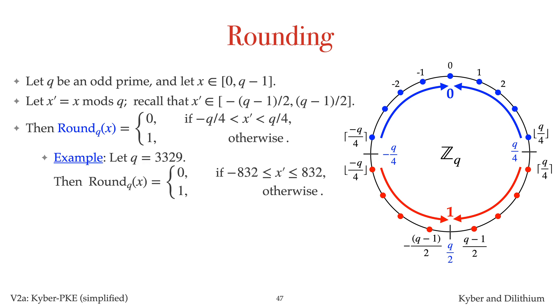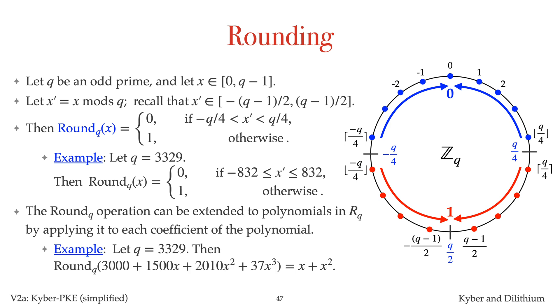For example, if q is 3329, then the rounding of x is 0 if x mod s q is between minus 832 and plus 832, and 1 otherwise. The rounding function can be extended in a natural way to polynomials by applying the round function to each coefficient of the polynomial. For example, the rounding of this polynomial is x plus x squared.